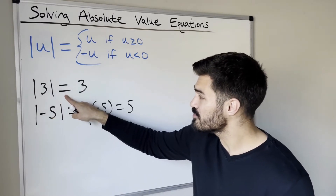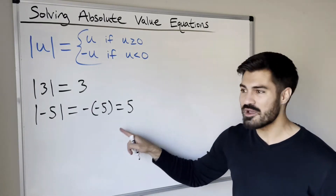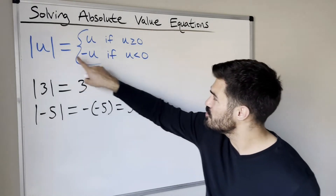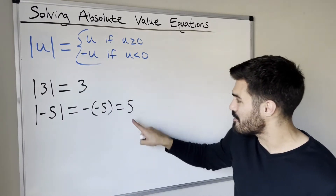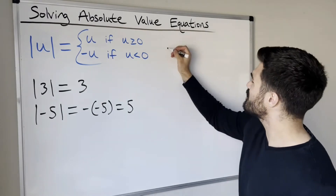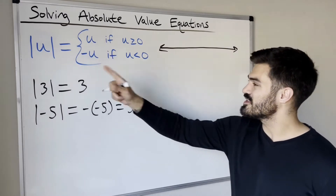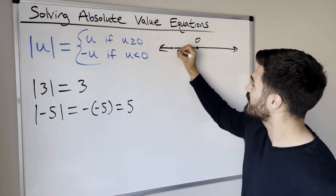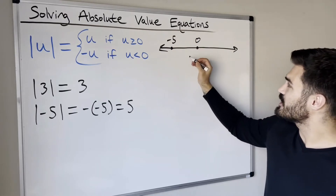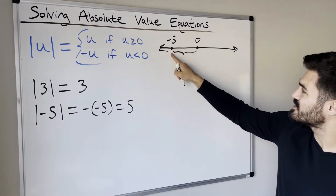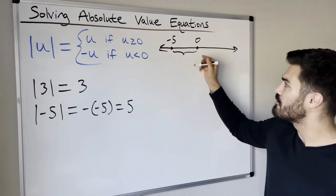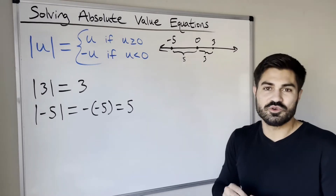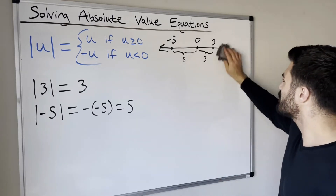This is the most common way absolute value is understood: the absolute value of a positive number is just itself, and the absolute value of a negative number — you just get rid of the negative. Absolute value makes negative numbers positive. That's what the definition is telling us: if u is less than zero, we multiply by negative one to make it positive. There's another useful way to think about it: the absolute value of a real number represents the distance from zero on the number line. For example, negative 5 is a distance of 5 from zero, so its absolute value is 5.